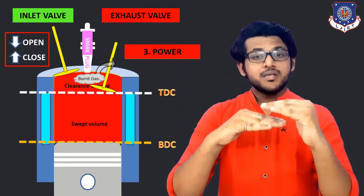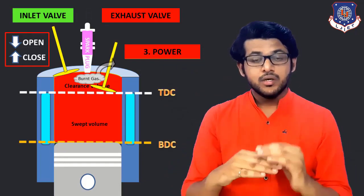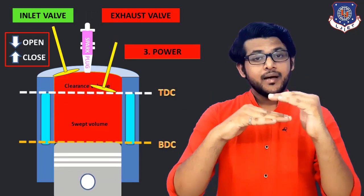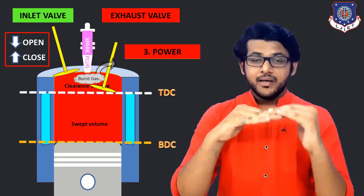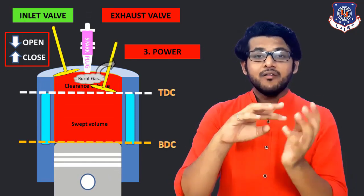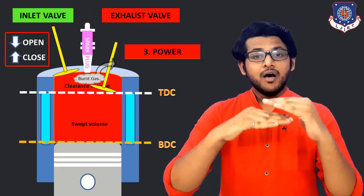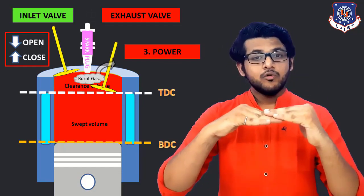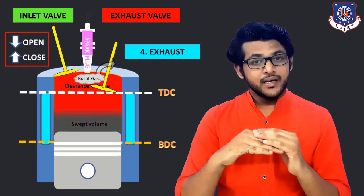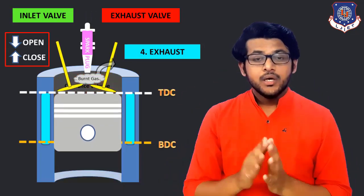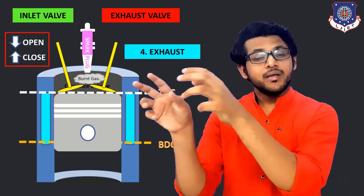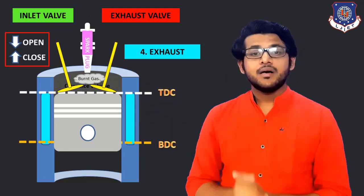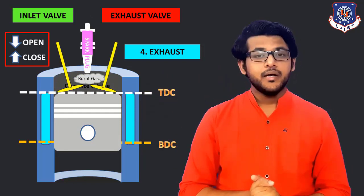So in the power stroke, the exhaust valve will start opening, and when the piston reaches BDC, the valve is almost already opened. In the fourth stroke — exhaust stroke — the piston will move from BDC to TDC again and the valve is already opened. So all the gases will be removed easily from that open valve and the exhaust will be done.